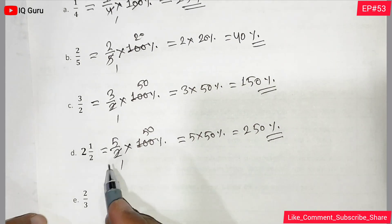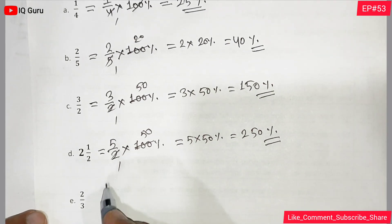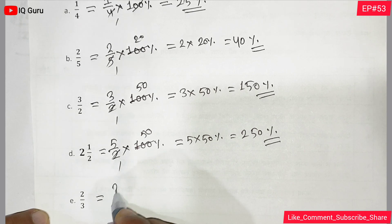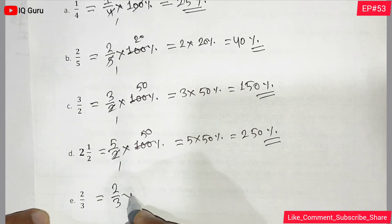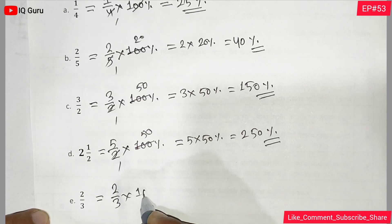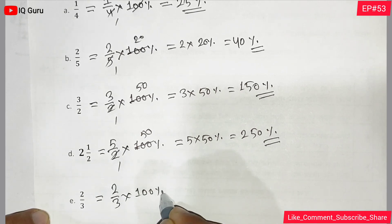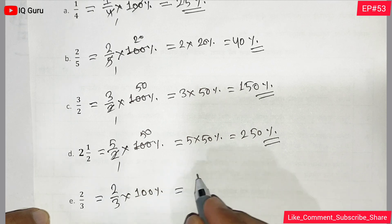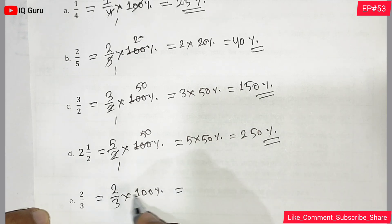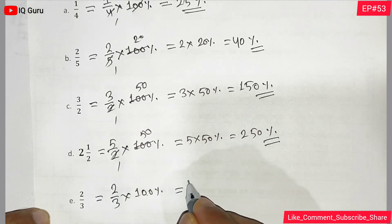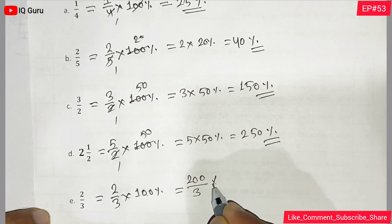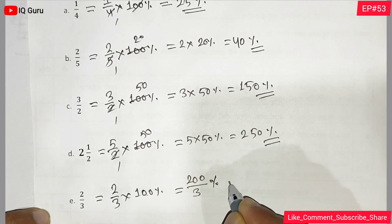This is question number e: 2 by 3 into 100 percent equals 66.67 percent.